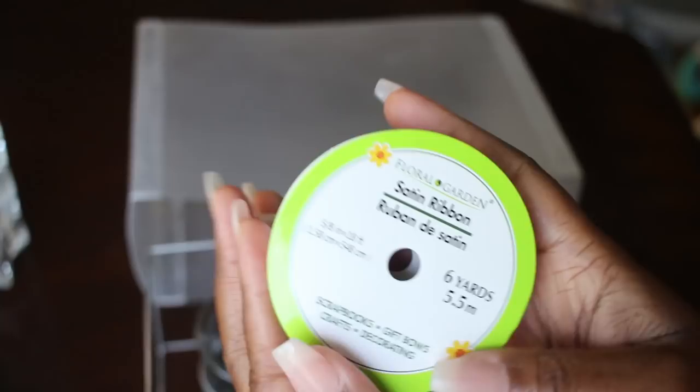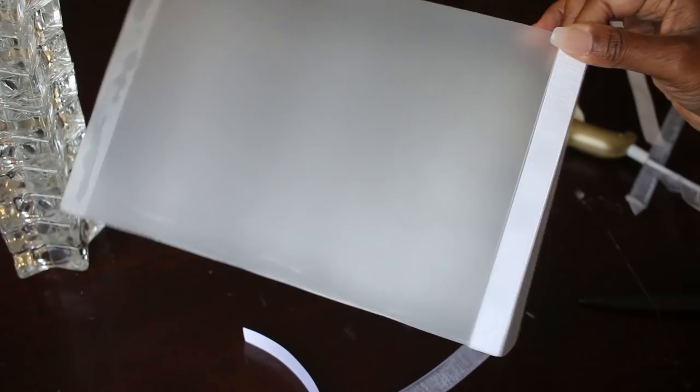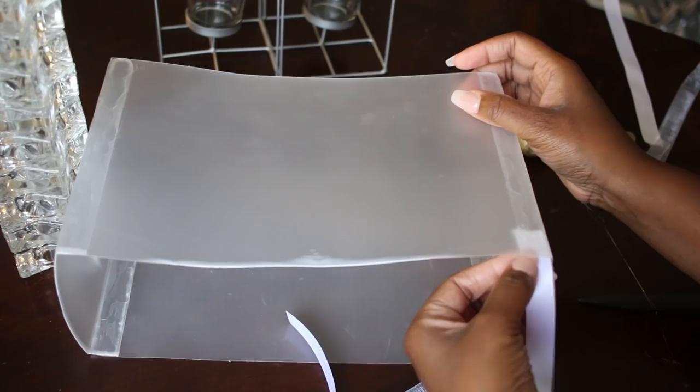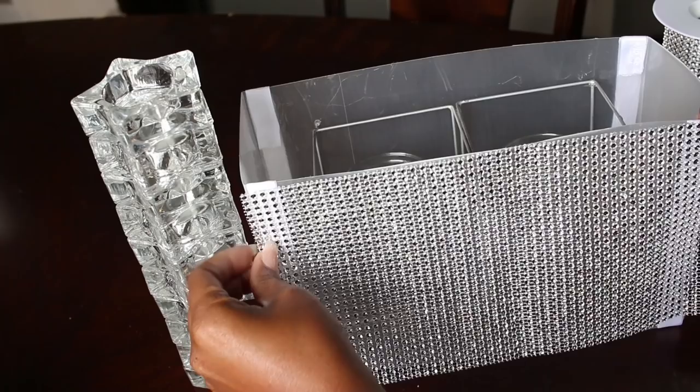Now I'm using satin ribbon because I didn't like the way the glue looked on the cutting mats. I'm covering that area with ribbon that I also purchased from Dollar Tree.